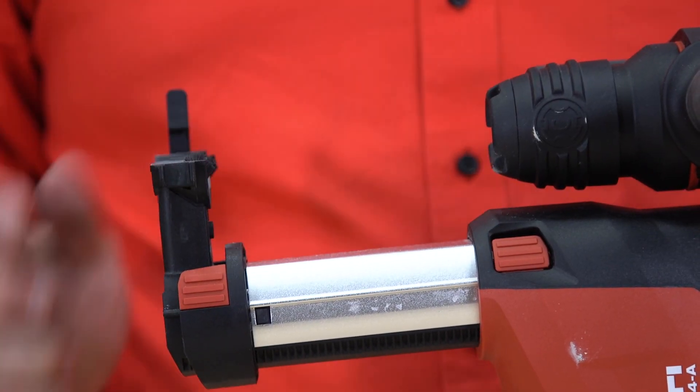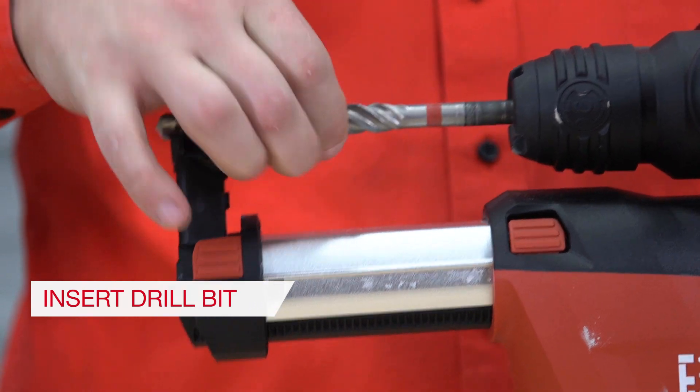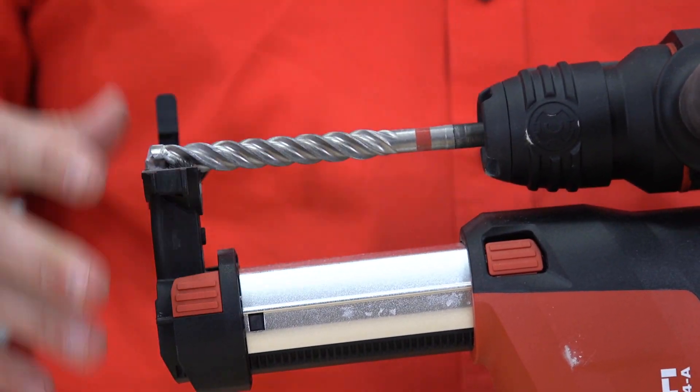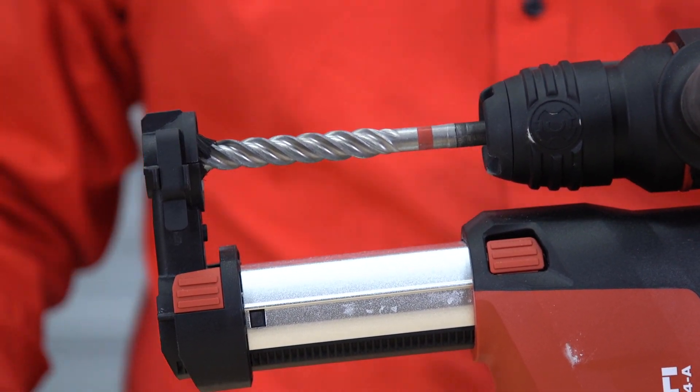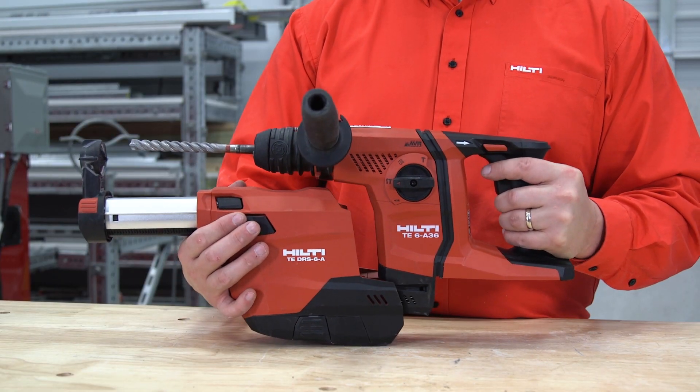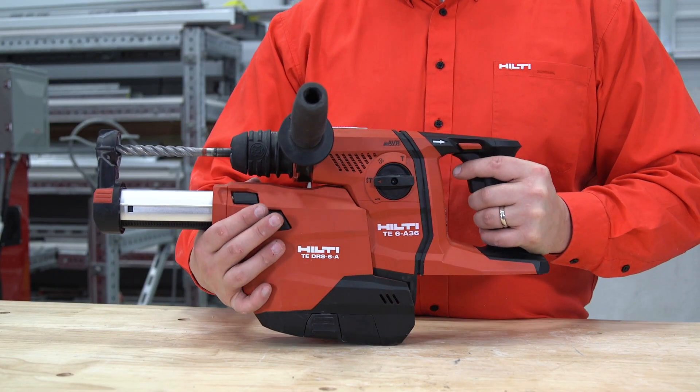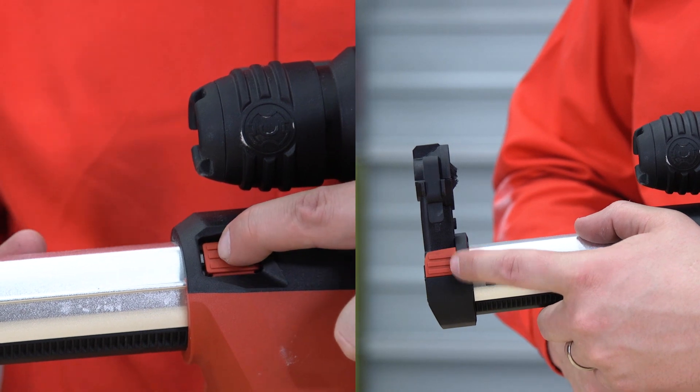If equipped, open the brush ring, insert the drill bit into the tool, and close the ring. If the ring does not open, insert the bit into the tool and then into the brush ring to reduce wear on the brushes.